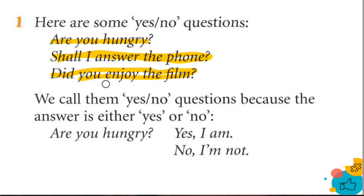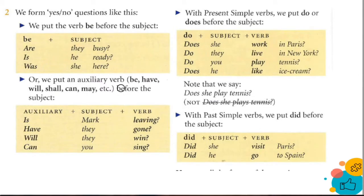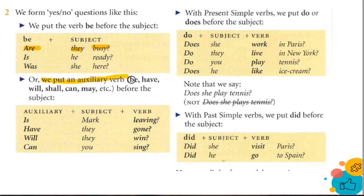Ahora, pasemos a la siguiente. Formamos el yes and no question de esta forma: we put the verb 'be' before the subject. Nosotros ponemos el verbo to be antes del sujeto. Are they busy? Is he ready? Was she here? Cuando usamos verbos que no son to be, ponemos el auxiliar — ya sea be, have, will, shall, can, may — antes del sujeto. Is Mark leaving? Have they gone? Will they win? Can you sing?